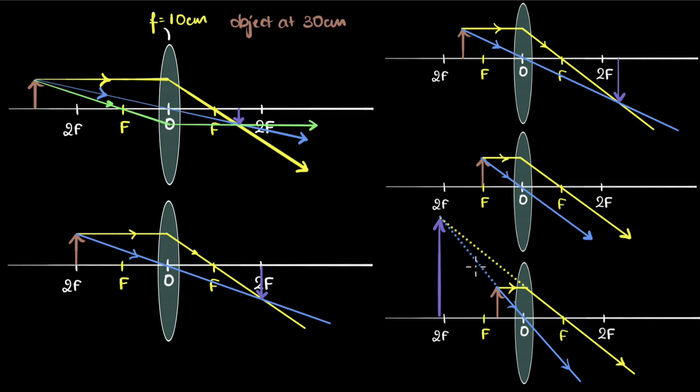And therefore if I extend them backward, there they meet. This means the rays appear to be coming from here. So we're gonna get an enlarged image but this time it's erect. This means it's a virtual image. You can't capture this on a screen. You get a virtual erect enlarged image.